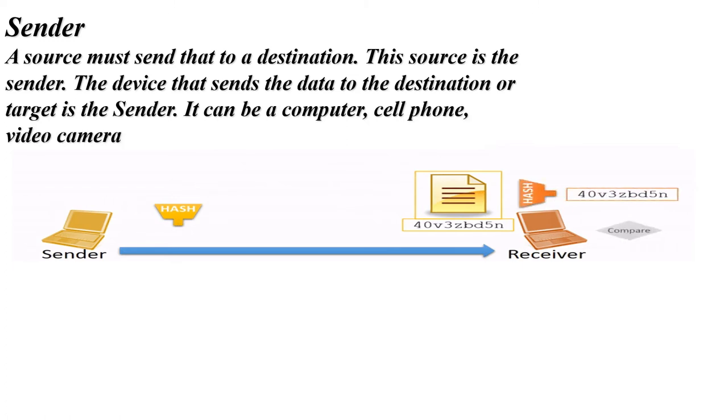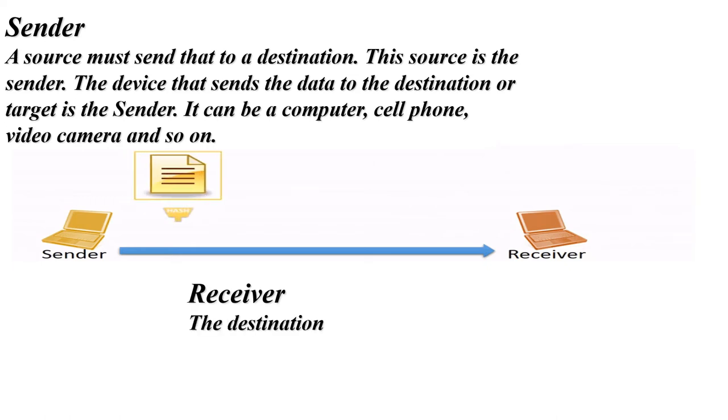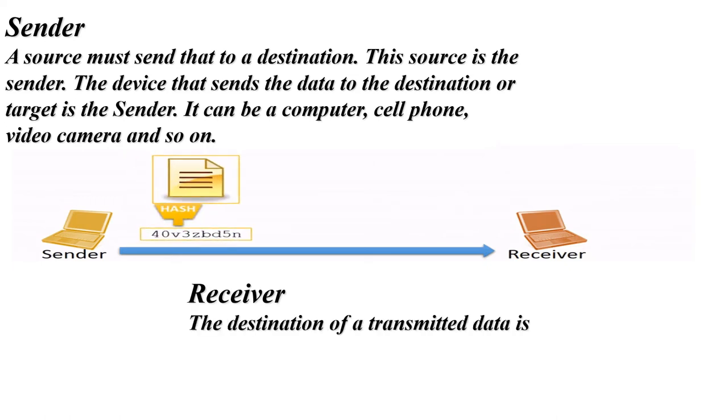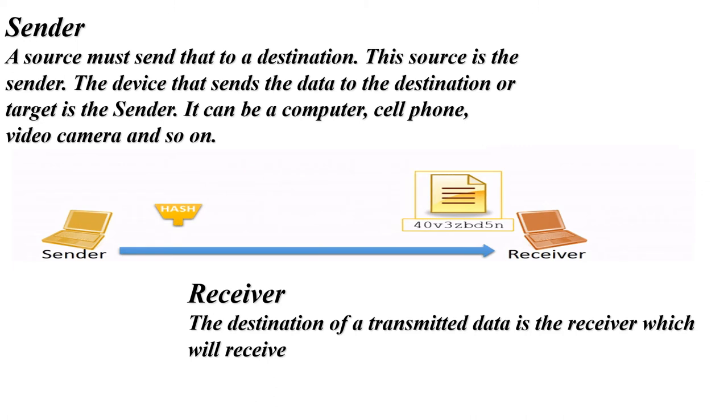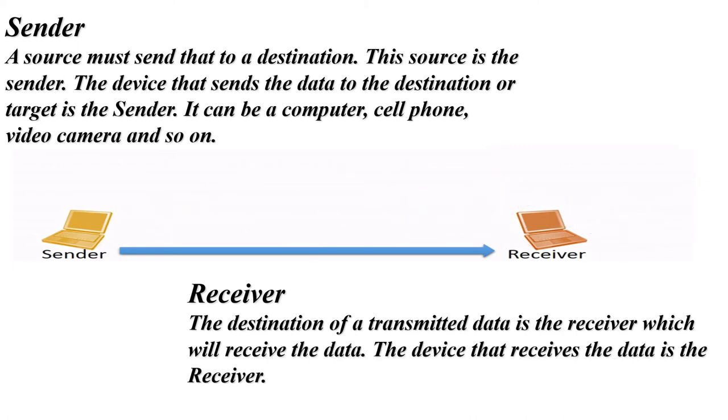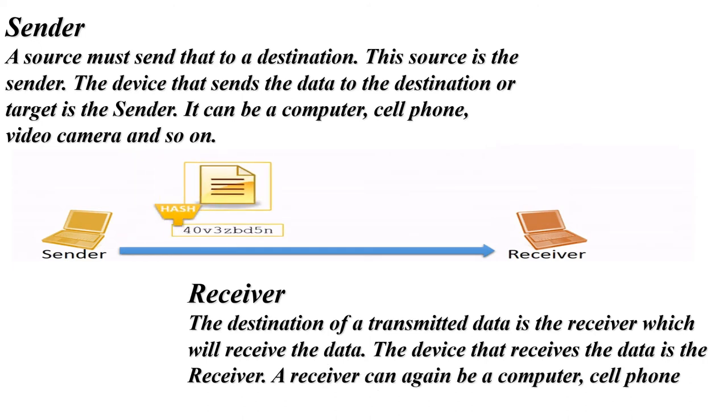The destination of transmitted data is the receiver, which will receive the data. The device that receives the data is the receiver. A receiver can be a computer, cell phone, video camera, and so on.